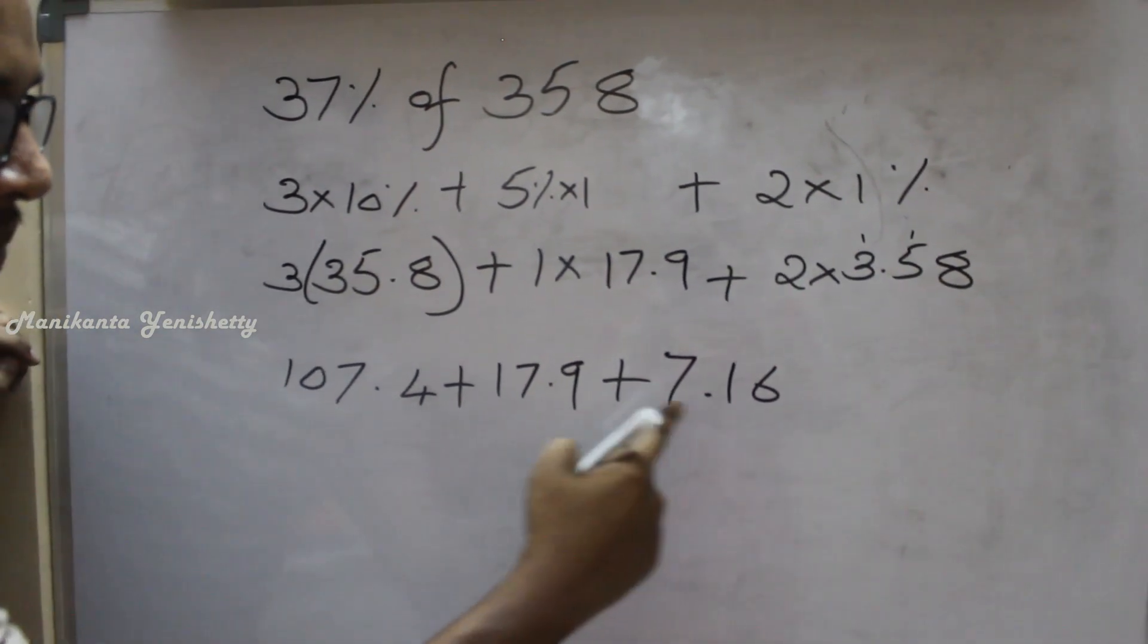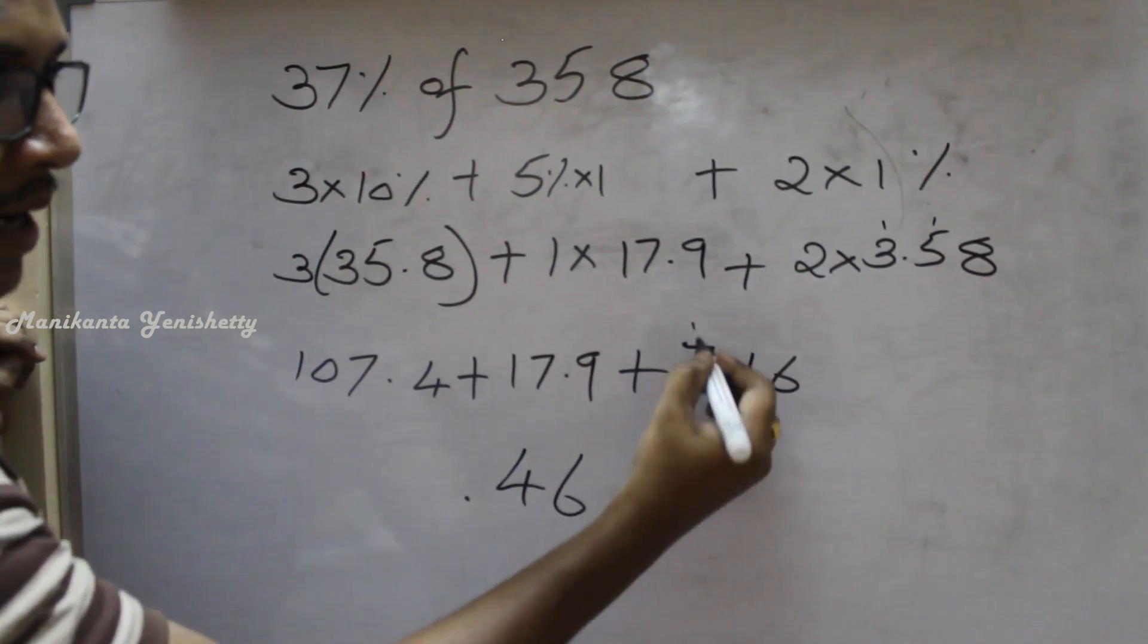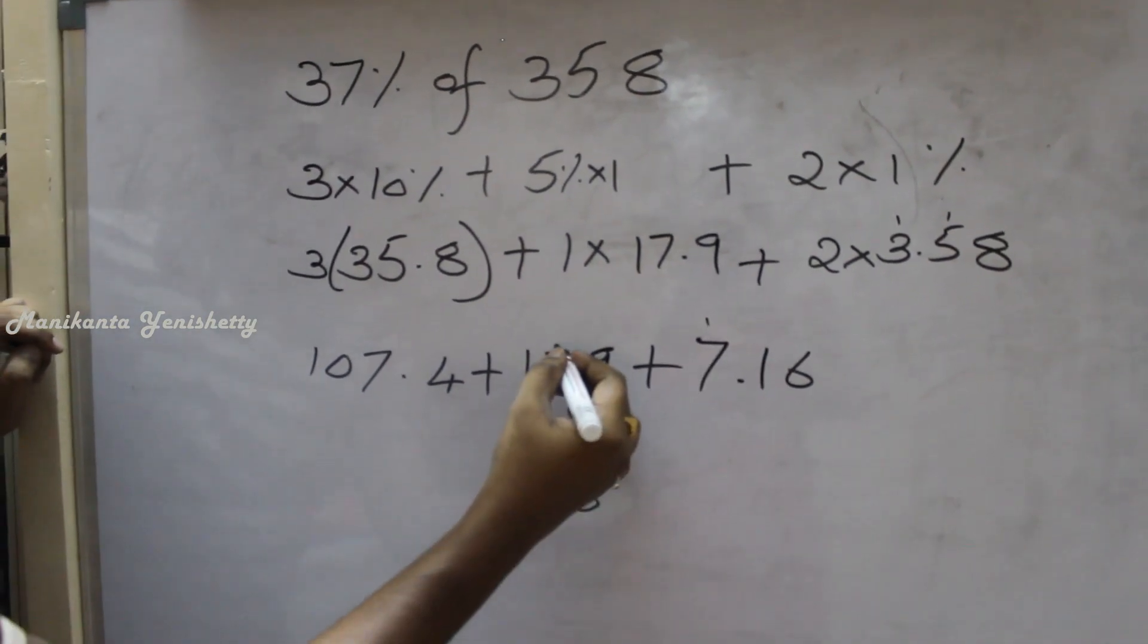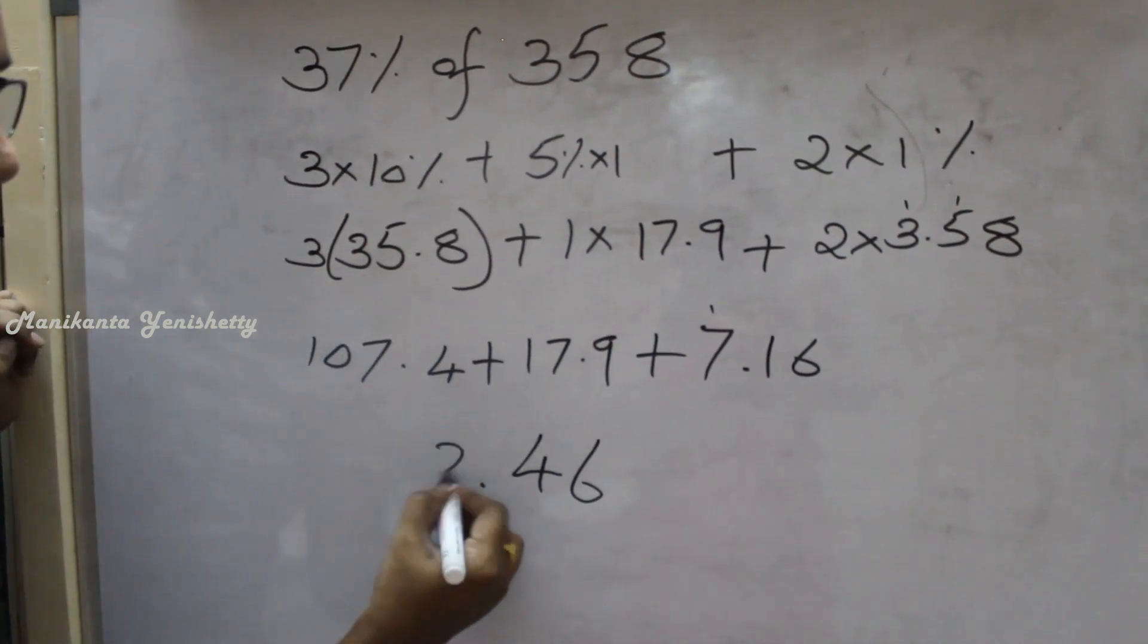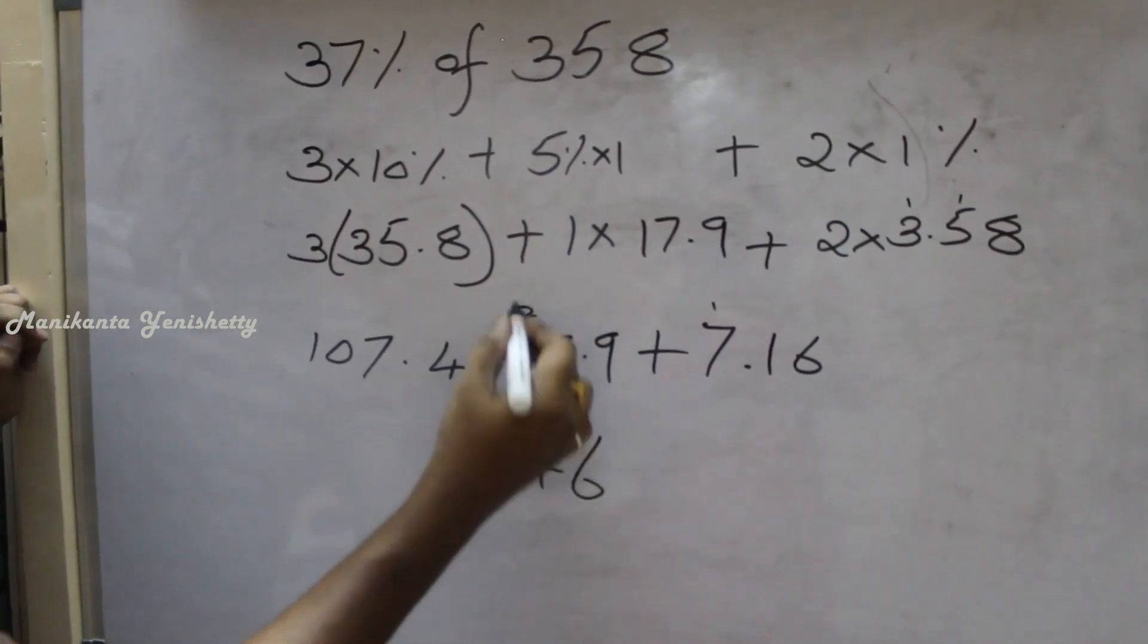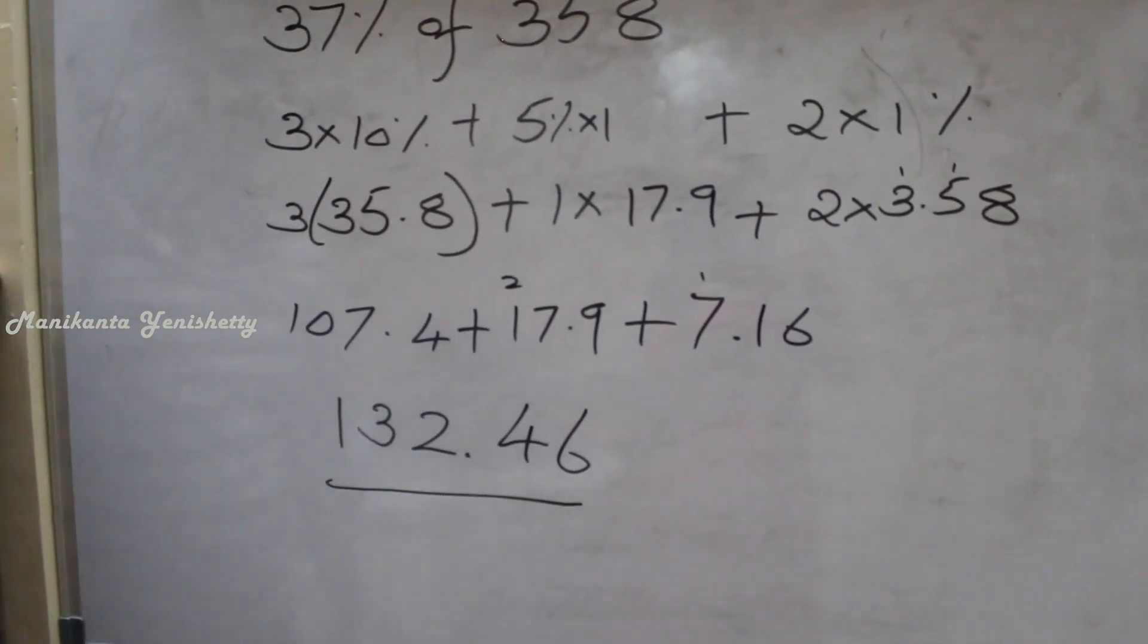After decimal, 2 digits is only 16. Then 1 plus 9 is 10, 10 plus 4 is 14. Then 1 carry 8, 8 plus 7 is 15, 15 plus 7 is nothing but 22. Then 2 carry here, 2 plus 1 is 3. 132.46 is nothing but the answer.